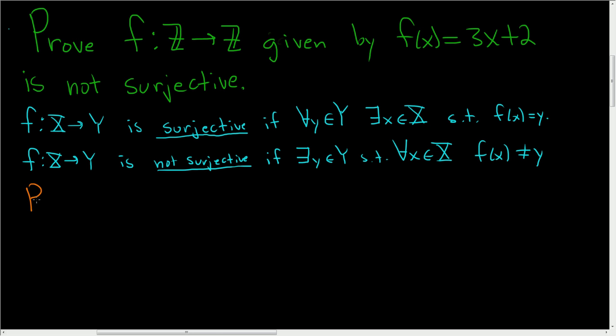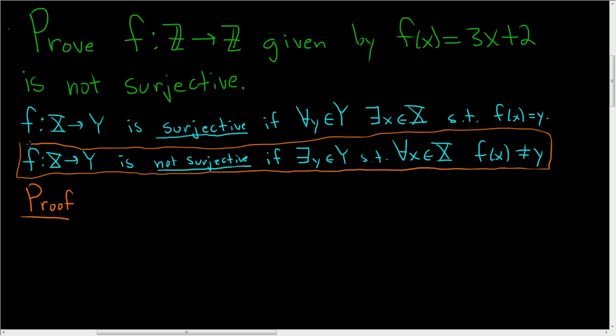Let's go ahead and prove this. According to this definition, all we have to do is produce a value of y in the codomain. This is the codomain and this is the domain - they're the same in this case. We have to show the existence of a y. Let's try to figure that out. We need a y value such that f(x) is not equal to y.